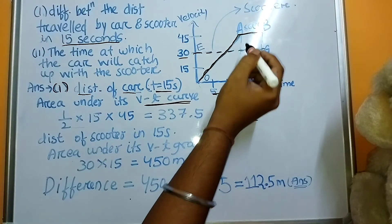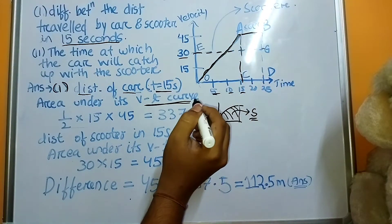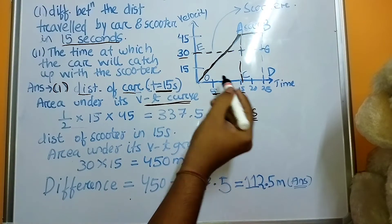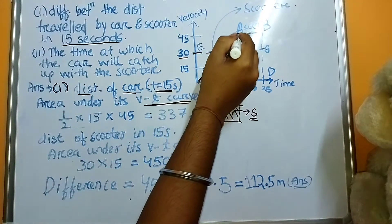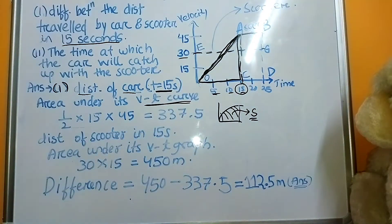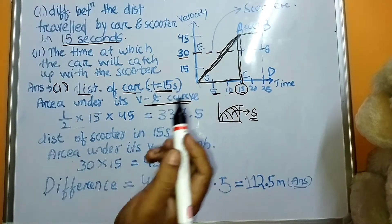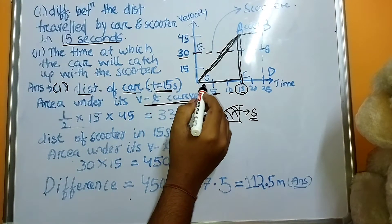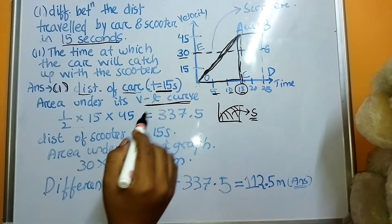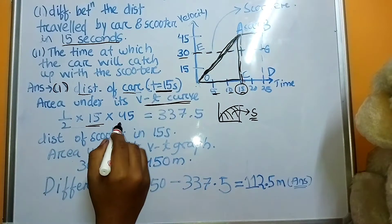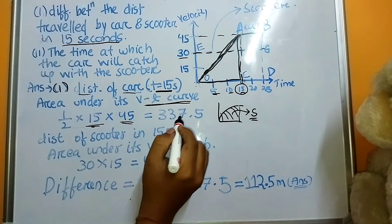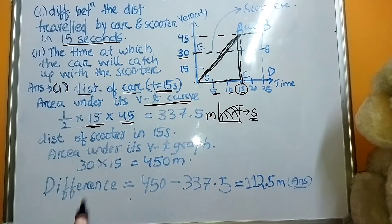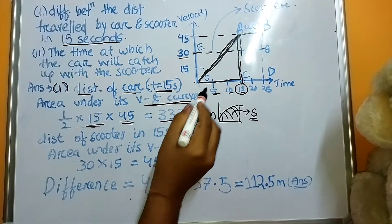The motion of the car goes further, but we will take only up to 15 seconds as given. So we take the triangle formed up to 15 seconds. The area of this triangle is half × base × height. The base is from 0 to 15, that is 15, and the height is from 0 to 45. So the area is ½ × 15 × 45 = 337.5 meters. This is the distance travelled by the car in 15 seconds.